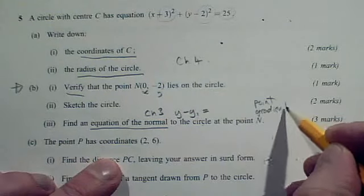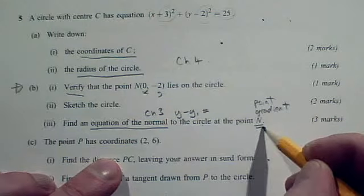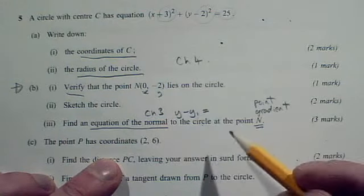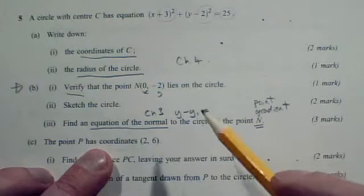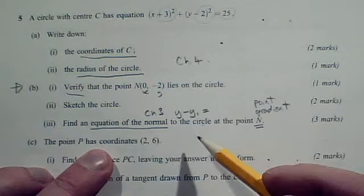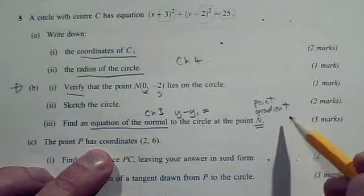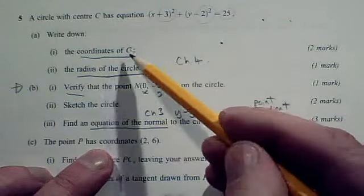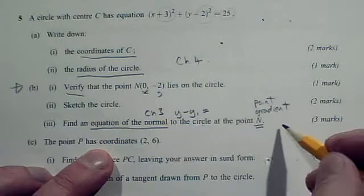You want the normal at N, so you'd like to know the coordinates of N. And oh look, you do. But you also need to get a gradient. Now for circles you use the two point method for gradients. N is one of your points. The other point is the coordinates of C, the centre.